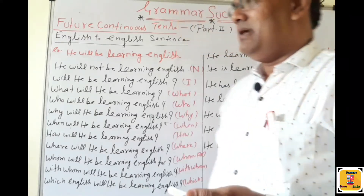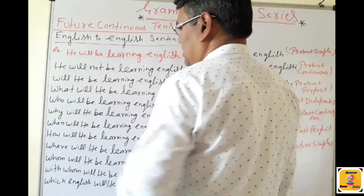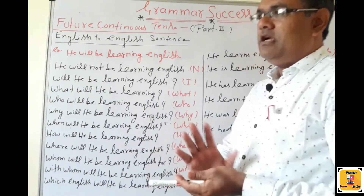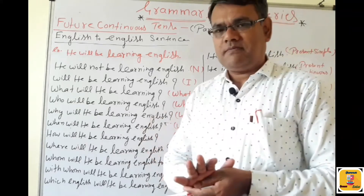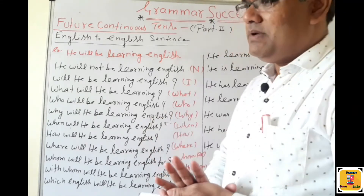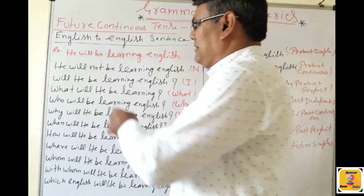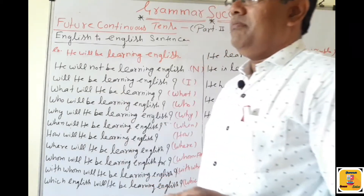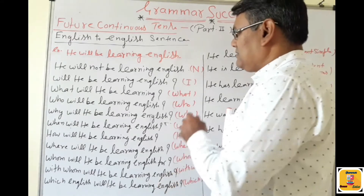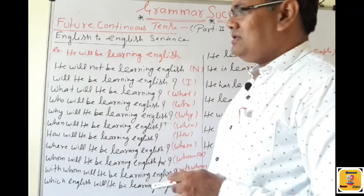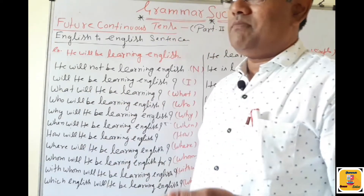Negative: 'He will not be learning English.' 'Not' is used between two verbs. Two verbs means 'will be,' 'has been,' 'have been,' 'had been.' So: 'He will not be learning English.' Next, the interrogative sentence: 'Will he be learning English?' — interrogative.